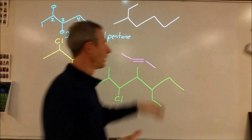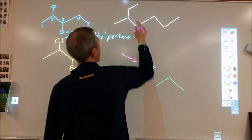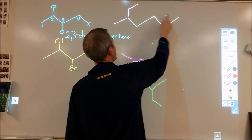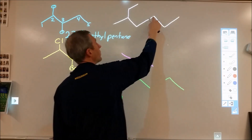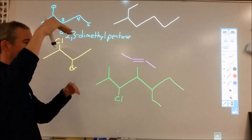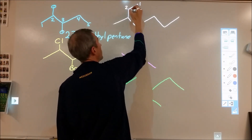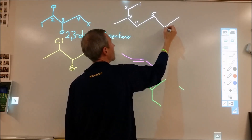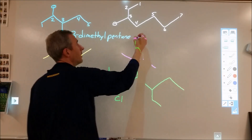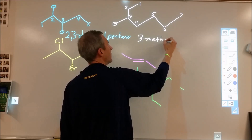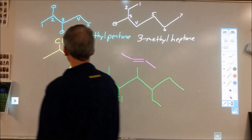For the second compound, I look for the longest chain. I could count six, but I can get a longer chain of seven by going a different route. The longest chain is the longest continuous path without lifting your pen. Numbering from the end closest to the first branch — one, two, three, four, five, six, seven — I have a methyl group on the third carbon, so this is 3-methylheptane.